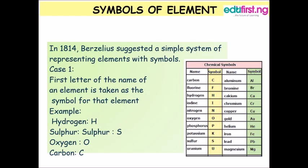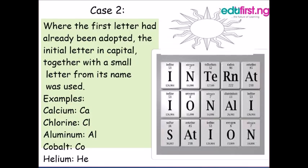Case 2: Where the first letter had already been adopted, the initial letter in capital together with a small letter from its name should be used. Examples include calcium Ca, chlorine Cl, aluminium Al, cobalt Co, and helium He.